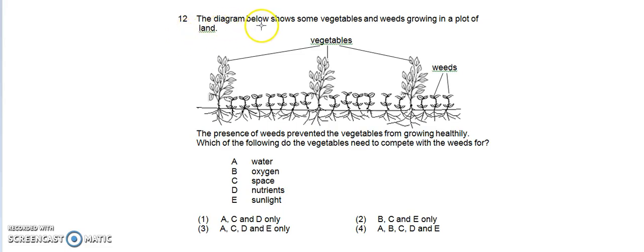Question 12. The diagram below shows some vegetables and weeds growing in a plot of land.